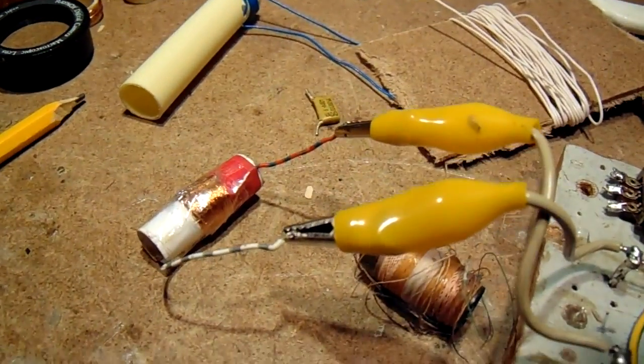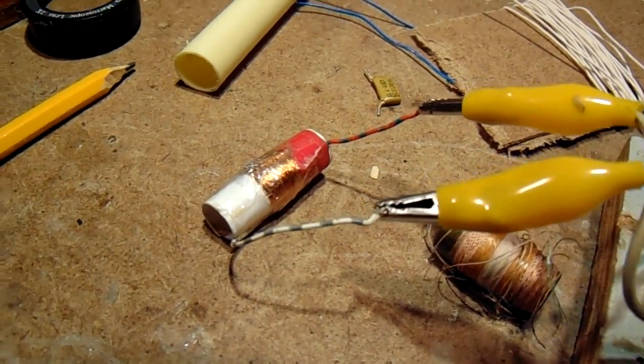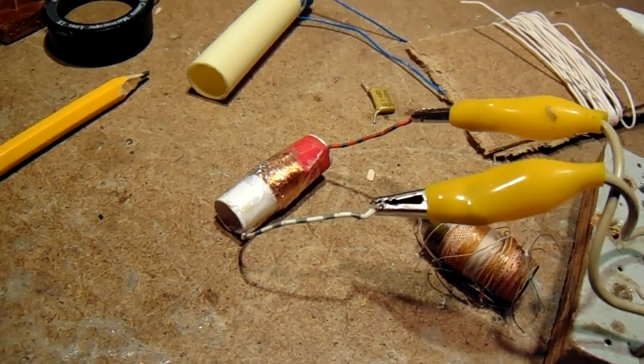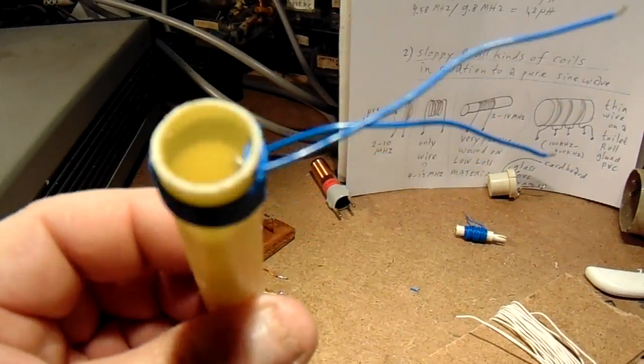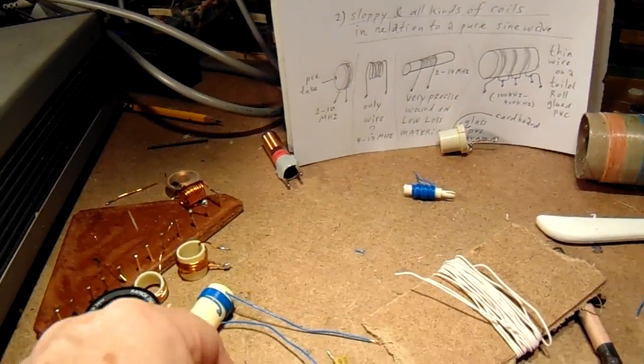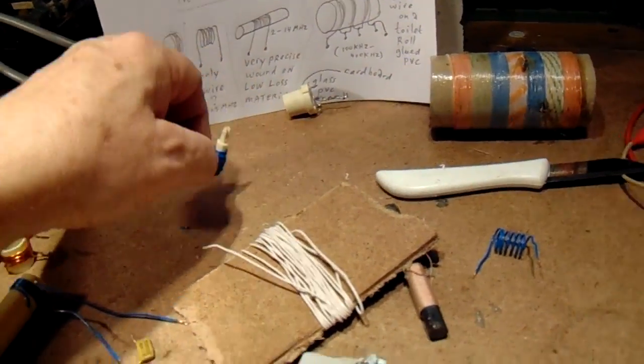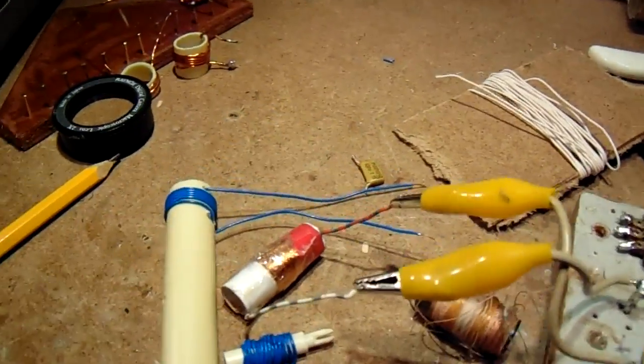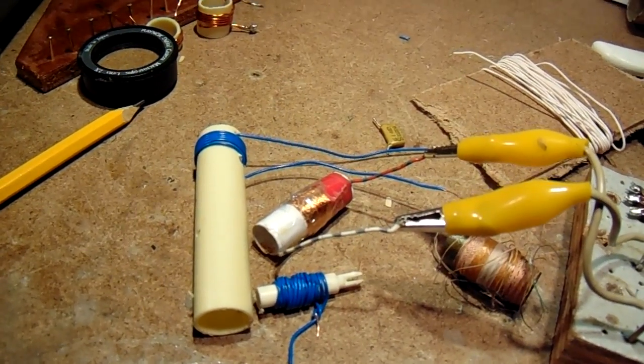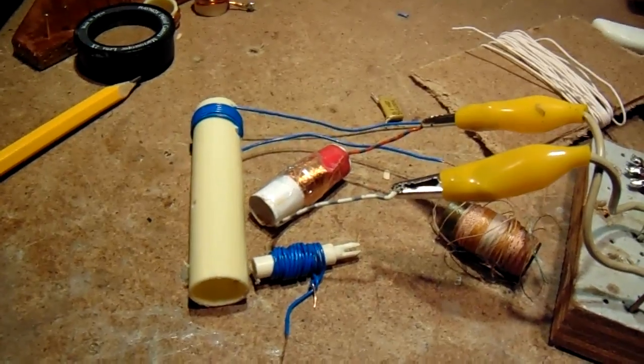So when you want to make a coil, do experiments. That's the only thing that I can tell. When you want to make a radio that works on, say, 5 megahertz or 10 megahertz, do some experiments with coils here, like this, on the PVC tube, or on cardboard, etc. And experiment as long until you find a coil that works properly in the frequency band that you want to use and has a good waveform.